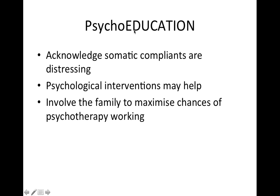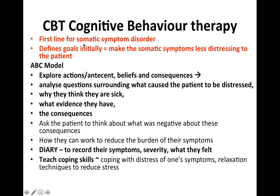Going further into psychoeducation, it's important to acknowledge that their somatic complaints are distressing, and that psychological interventions may help. You want to involve the family to maximise the chances of psychotherapy working. In terms of cognitive behavioural therapy, this is first line for somatic symptom disorder. You want to define goals initially — making the somatic symptoms less distressing to the patient. Using the ABC model, you explore the antecedents, beliefs, and consequences. Analyse questions surrounding what caused the patient to be distressed, why they think they are sick, what evidence they have, the consequences, and ask the patient to think about what was negative about these consequences and how they can work to reduce the burden of their symptoms. It is also good to recommend keeping a diary to record symptoms, severity, and what they felt, and to teach coping skills such as coping with distress and relaxation techniques to reduce stress.